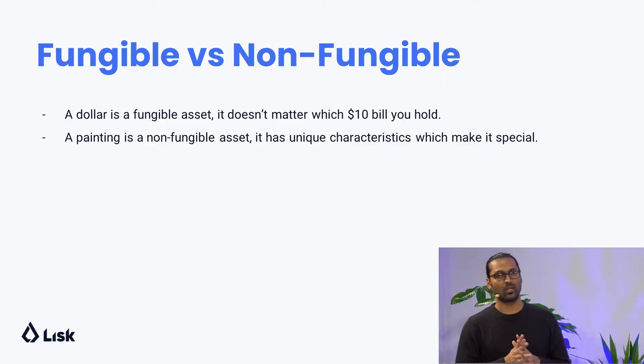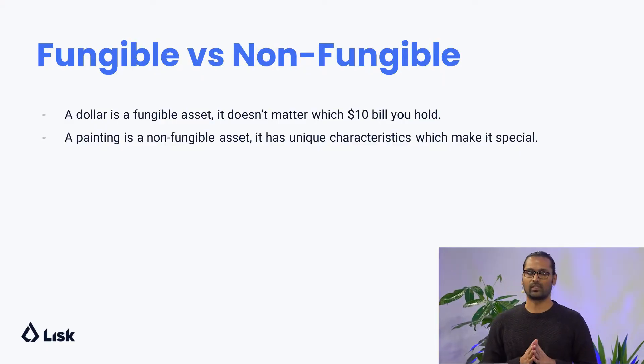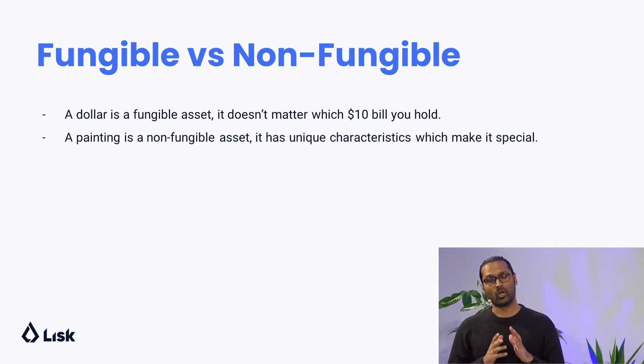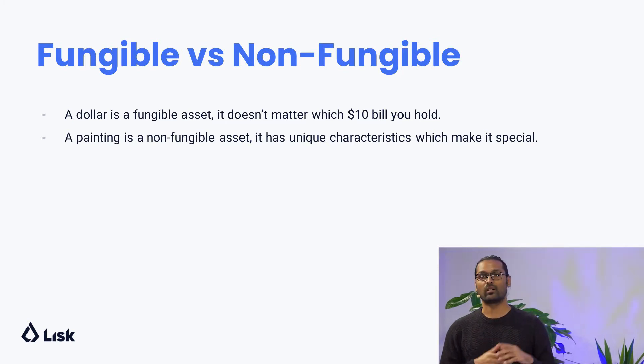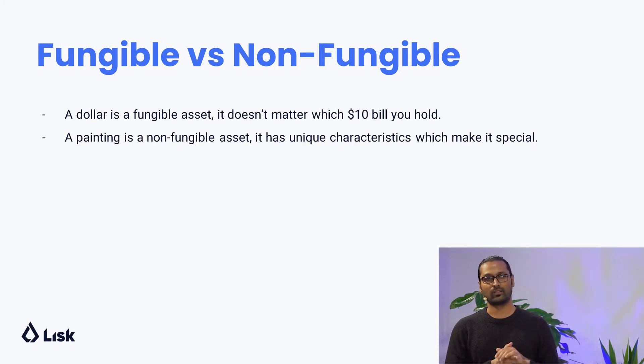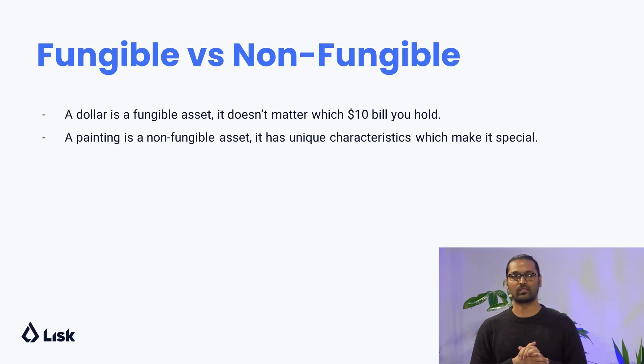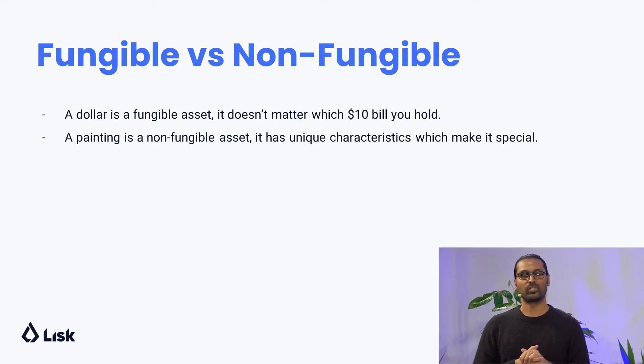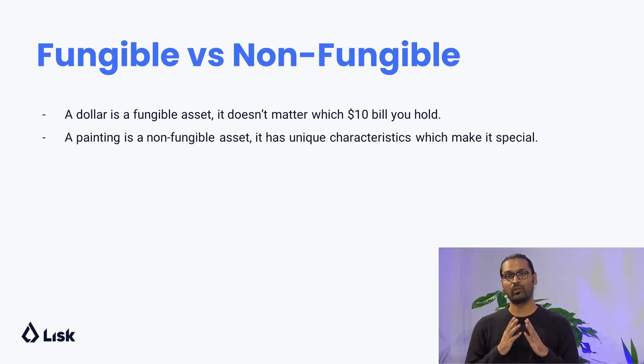Before we move on, let us first understand what is a fungible and non-fungible asset. A fungible asset is something which is mutually interchangeable, like a dollar bill or Bitcoin, whereas a non-fungible asset is something non-mutually interchangeable, like a painting — like the Mona Lisa.